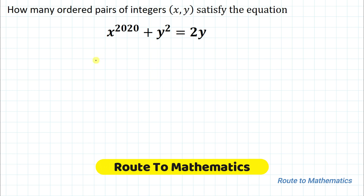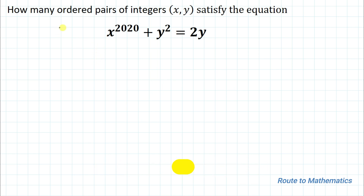Hello everyone, welcome to Root to Mathematics. In this video we're going to solve this interesting question: how many ordered pairs of integers x, y satisfy the equation x to the power 2020 plus y squared equals 2y? We are asked to find the number of solutions of x and y.